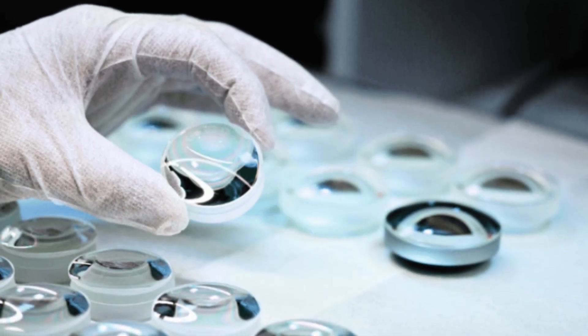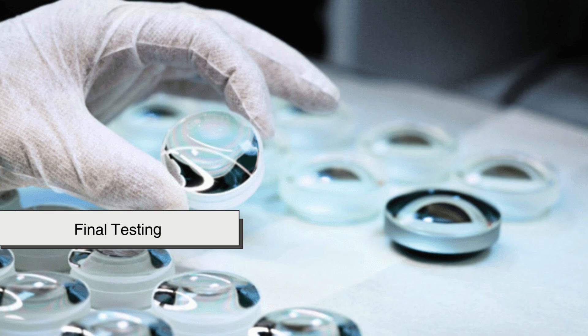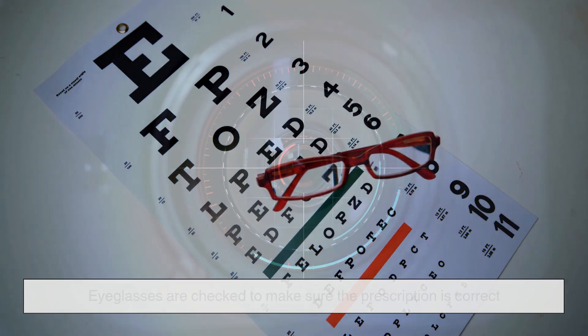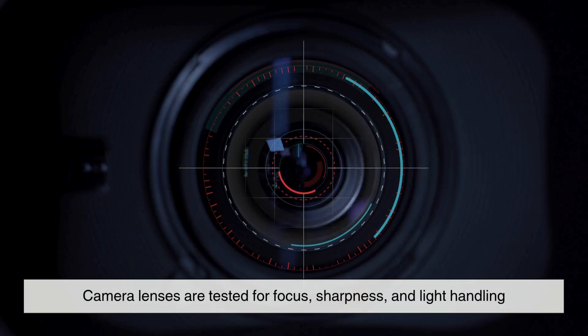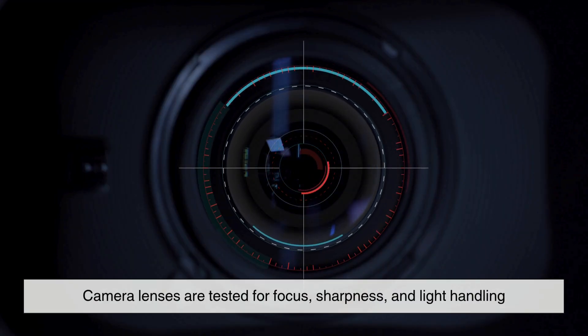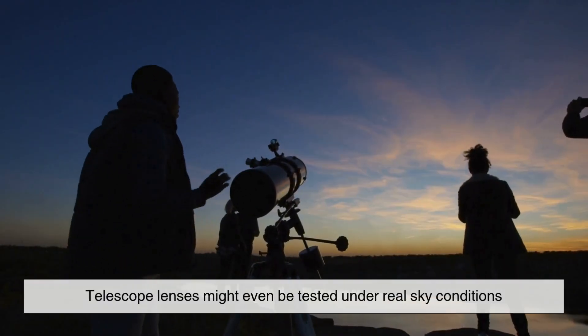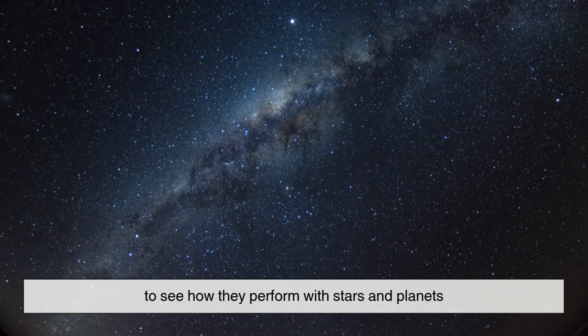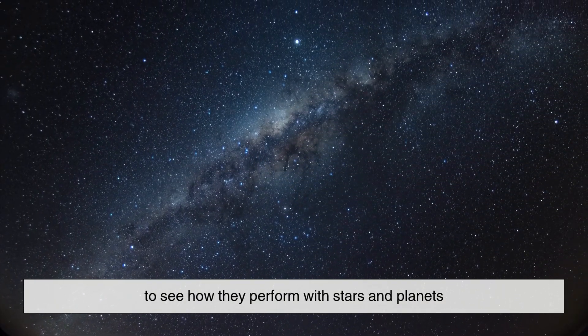Before any lens is shipped out, it goes through final testing. Eyeglasses are checked to make sure the prescription is correct. Camera lenses are tested for focus, sharpness, and light handling. Telescope lenses might even be tested under real sky conditions to see how they perform with stars and planets.